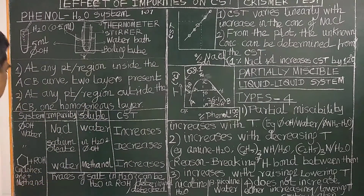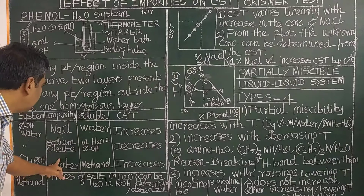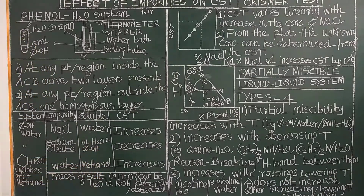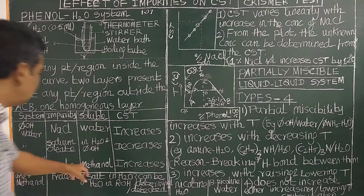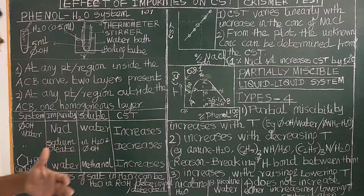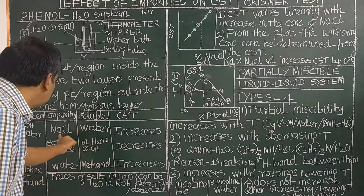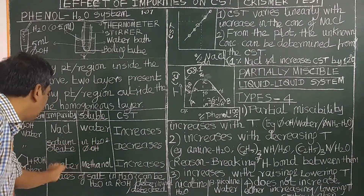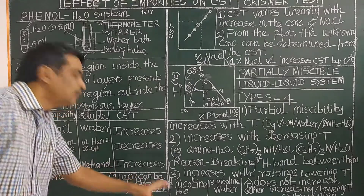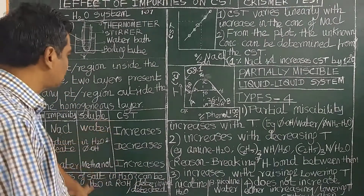Similarly, in the cyclohexane-methanol system, if water is present as an impurity in methanol, it increases the critical solution temperature. Therefore, by measuring the critical solution temperature, traces of salt present in water or traces of water present in methanol can be detected. That is the important application of this.